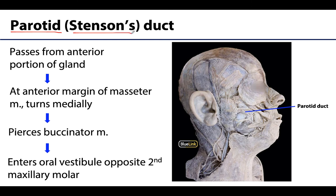Let's review the pathway of the parotid duct. The duct will emerge from the anterior border of the parotid gland, and it is typically pretty obvious superficial to the masseter muscle. The duct looks kind of like a large artery or vein, but of course it's not. At the anterior border of the masseter muscle it's going to turn medially to pierce through the buccinator muscle, and that's where you can kind of lose it in terms of the view.